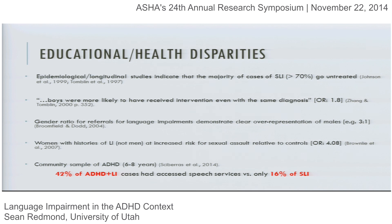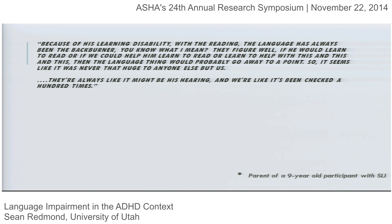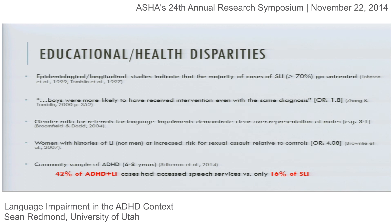In a recent community sample looking at how many kids with ADHD also had language impairment, they found that about half the kids with ADHD who had a language impairment had access to speech services, but in the non-ADHD group, only 16% had. That's the basis for the idea that if you have ADHD plus language impairment, the prognosis looks to be better than if you don't have ADHD.